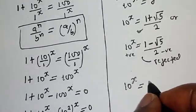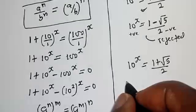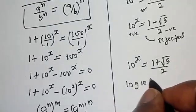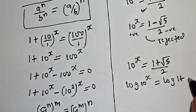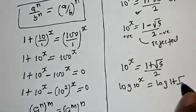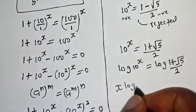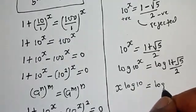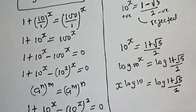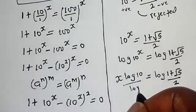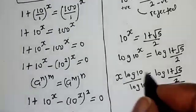Taking the log of both sides: log(10^s) equals log((1 + √5)/2). This gives s times log(10) equals log((1 + √5)/2). Dividing both sides by log(10), the log(10) terms cancel.